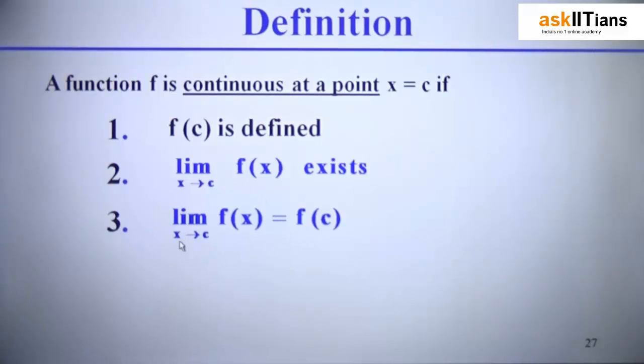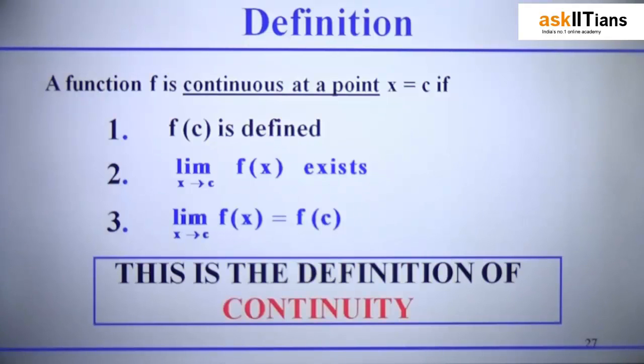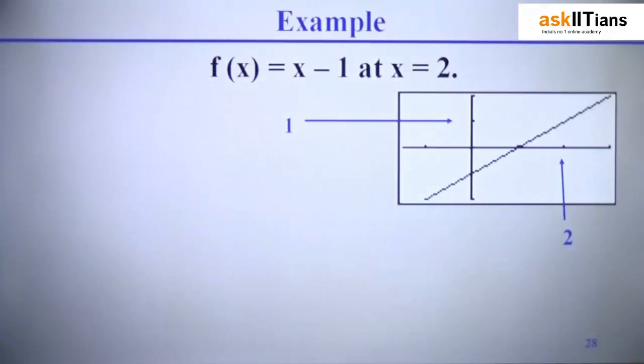And the third point is that the value of the function at x equal to c must be equal to the value of the function which we have found out by using limits. So if a given function satisfies these three kinds of conditions, we can say that the function is continuous, and these three definitions constitute the mathematical definition of continuity.